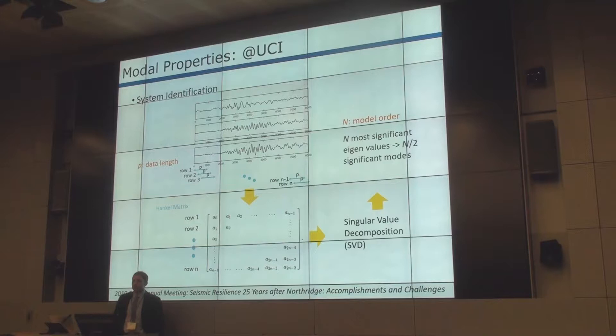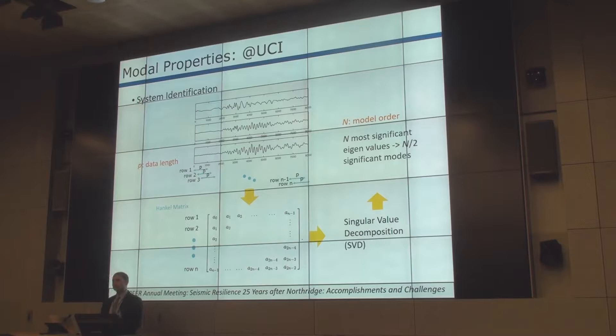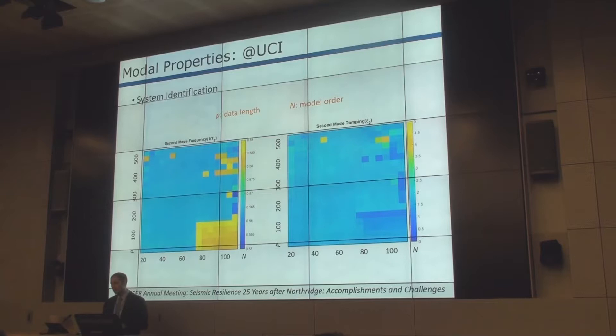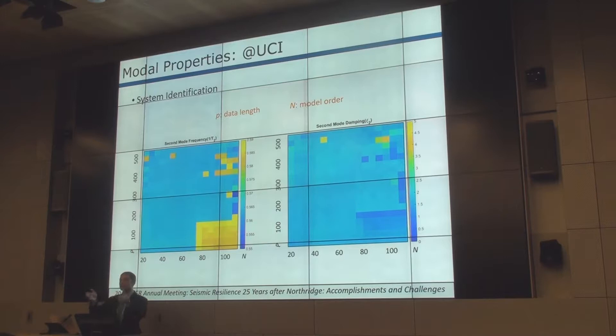Talking briefly about system identification techniques: essentially, you take chunks of data from your accelerometers, stack them together making a Hankel matrix, then do a singular value decomposition to come up with eigenvalues. Depending on the length of the chunk you pick and stack, and how many eigenvalues you pick for your system ID, you get different results. The results look something like these plots — the left-hand side shows frequency, the color shows estimated frequency, and the right-hand side shows equivalent damping for the second mode of a tall building. The horizontal axis shows the number of eigenvalues picked, and the vertical axis shows the length of data stacked.